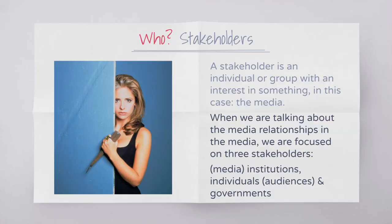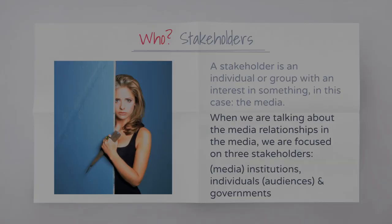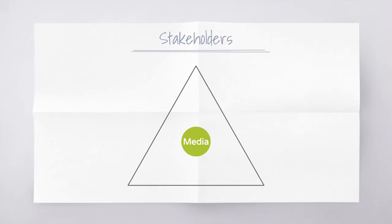Firstly, who's involved? We talk about our stakeholders in the media. A stakeholder is a term we give to somebody who has an interest in or is engaged with something — in this case, the media. When talking about media relationships, we're focused on three main stakeholders: the media institutions themselves — the production houses and distributors; individuals, which mainly means audiences; and finally, governments.